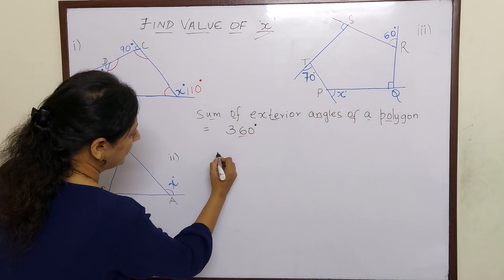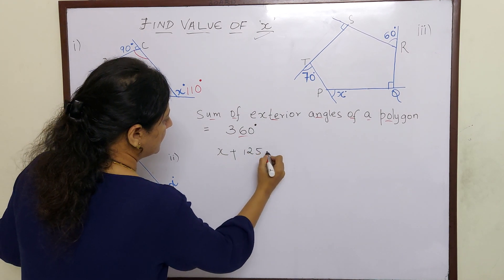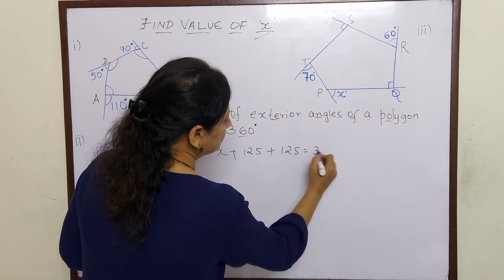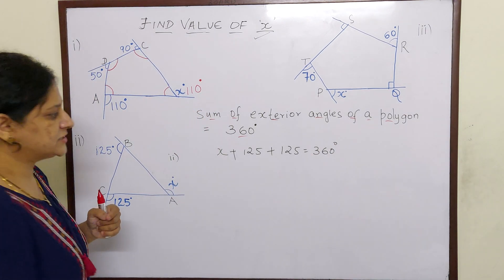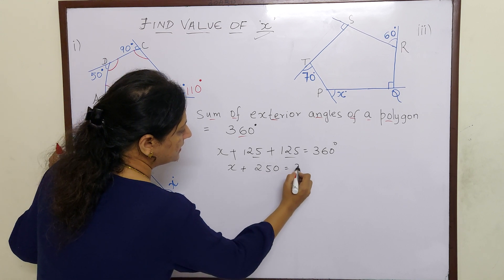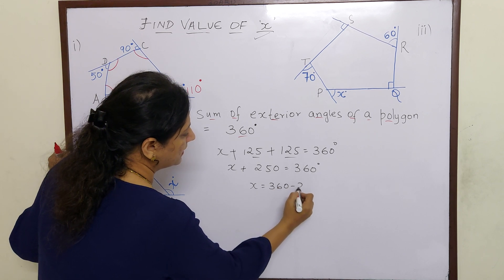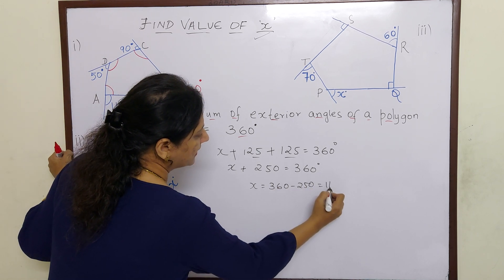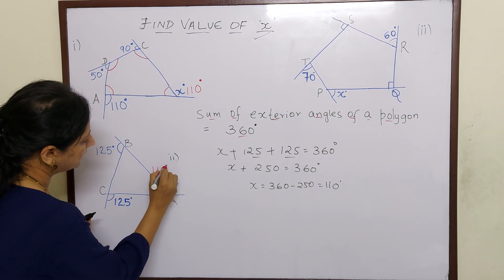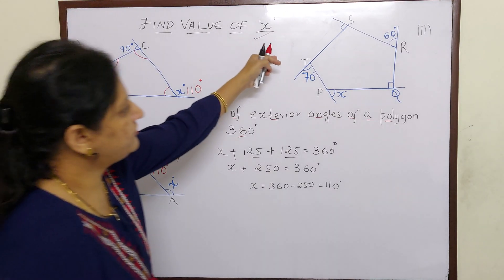So let us add: angle A plus angle B which is 125, plus angle C which is another exterior angle of 125. When you add this, they should be 360 degrees. So x plus 125 plus 125, which is 250, is equal to 360. Therefore x is equal to 360 minus 250, which is again 110 degrees. So here we have found the value 110.